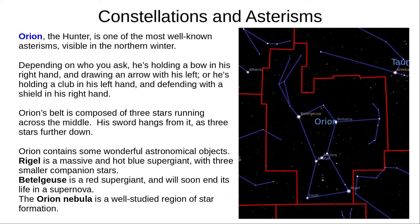Orion includes several fascinating astronomical objects, including Rigel, a massive hot blue supergiant with three companion stars; Betelgeuse, a red supergiant nearing the end of its life; and what looks like the middle star of Orion's sword, which is actually the Orion Nebula, a very well studied region of star formation.